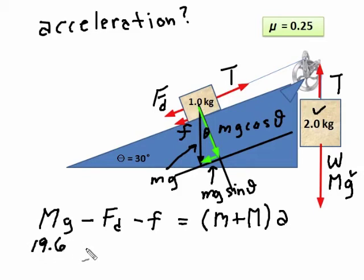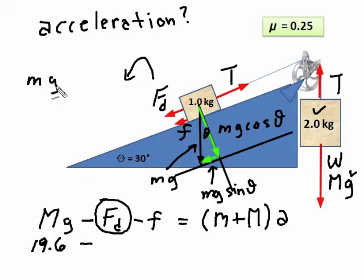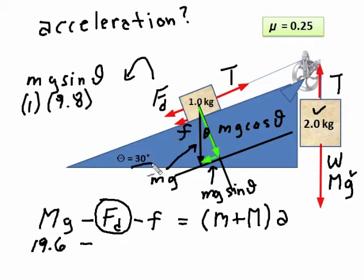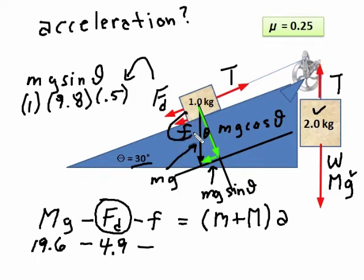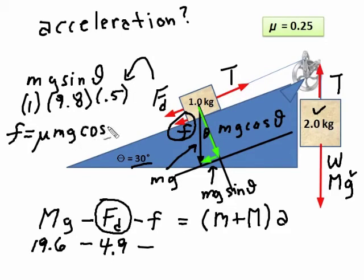Now we put in all the numbers. The big mg is 2 times 9.8, which is 19.6 N. The force down the incline is mg sine theta. Since m is 1, g is 9.8, and sine 30 is 0.5, that's easy to work out — you get 4.9 newtons. So it's 19.6 minus 4.9, and also acting on the system is the friction. Remember, friction is mu times the normal force. Mu is 0.25, and the normal force is mg cos theta.